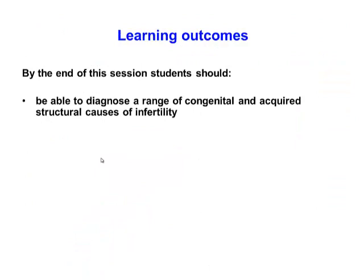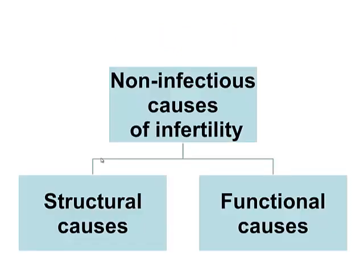In this particular session we are going to look at the congenital and acquired structures that cause infertility in cattle. You should be able to recognise these when you see them, diagnose them, and understand how they might have developed. We are talking about non-infectious causes of infertility as apart from bacterial causes, and we are going to focus on structural and functional causes.